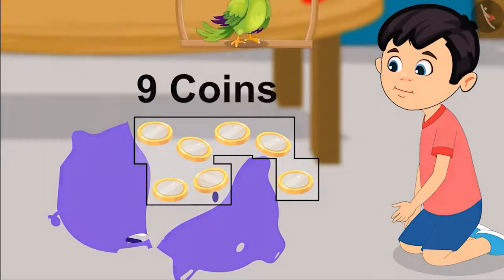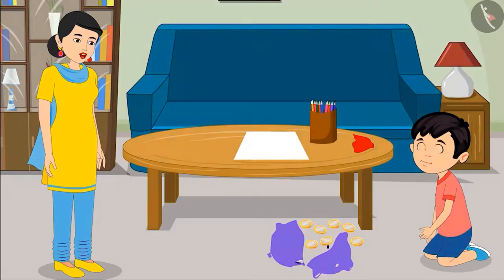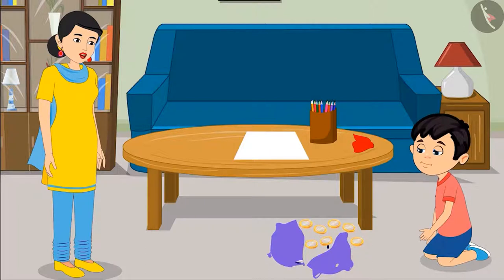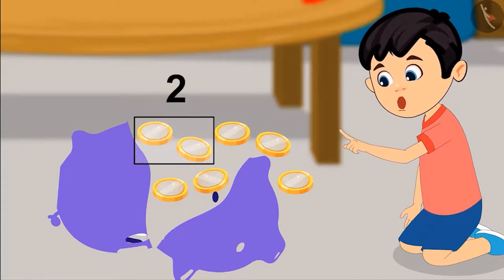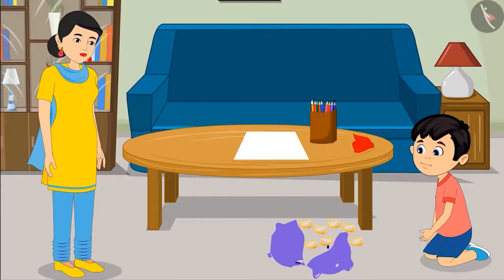The mother says Chotu did not count the coins one by one correctly — these are not nine coins. She asks him to count again one by one. Chotu recounts: 'One, two, three, four, five, six, and seven. This means these are seven coins.' The mother confirms: 'Yes, you are absolutely correct!'